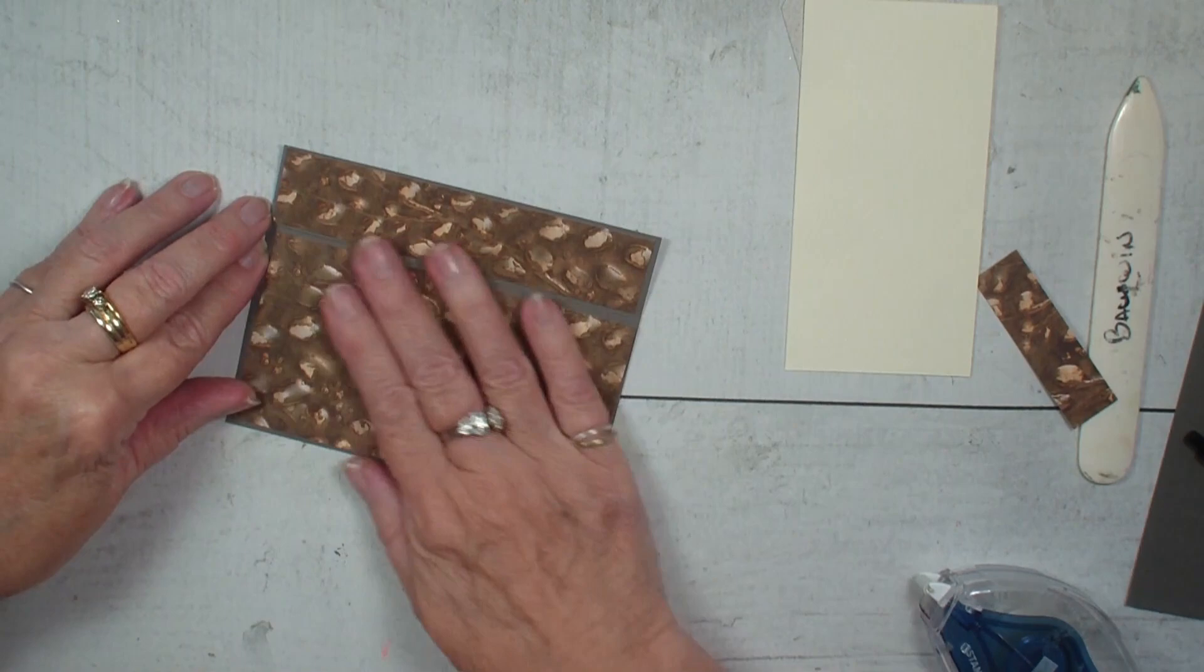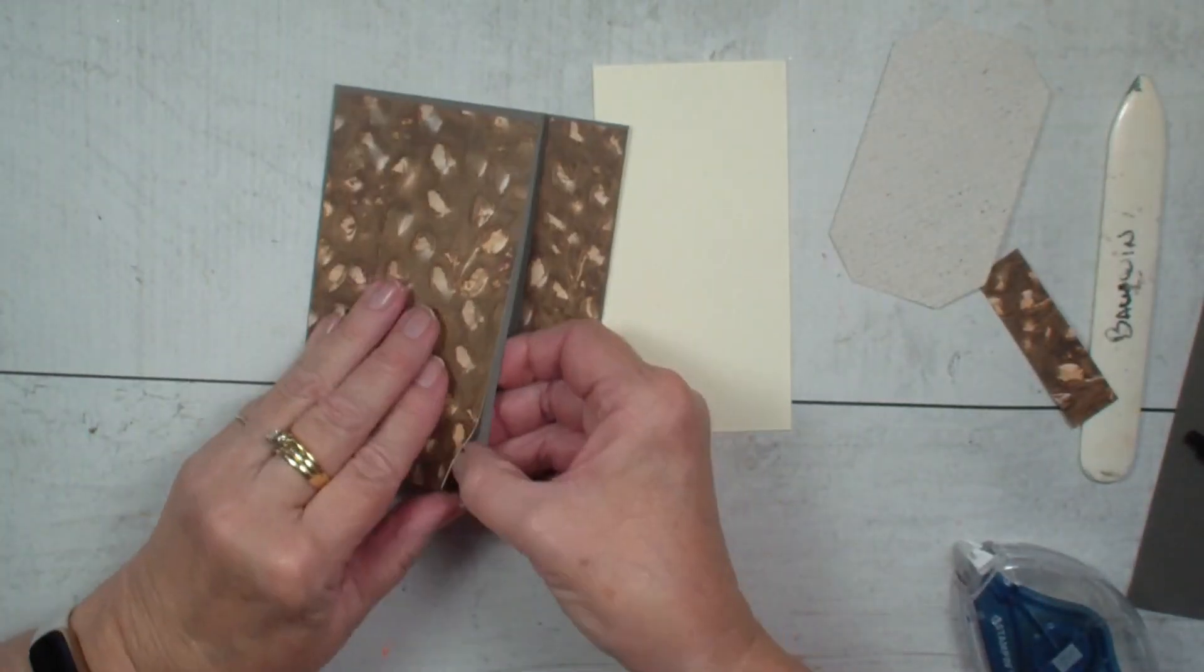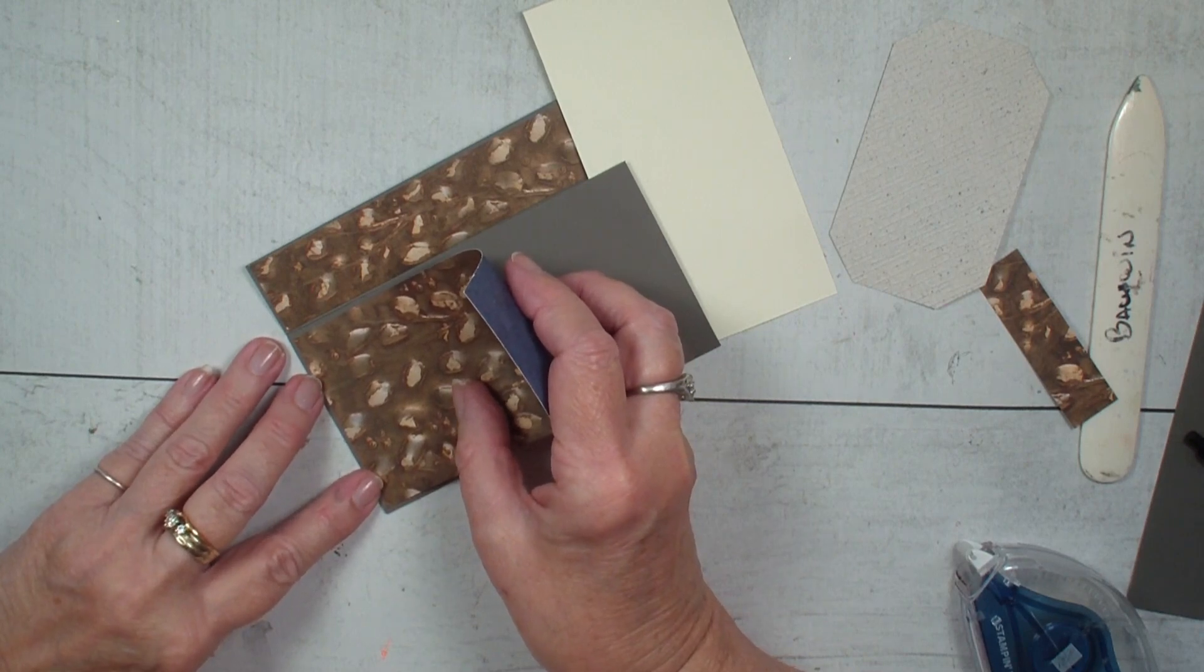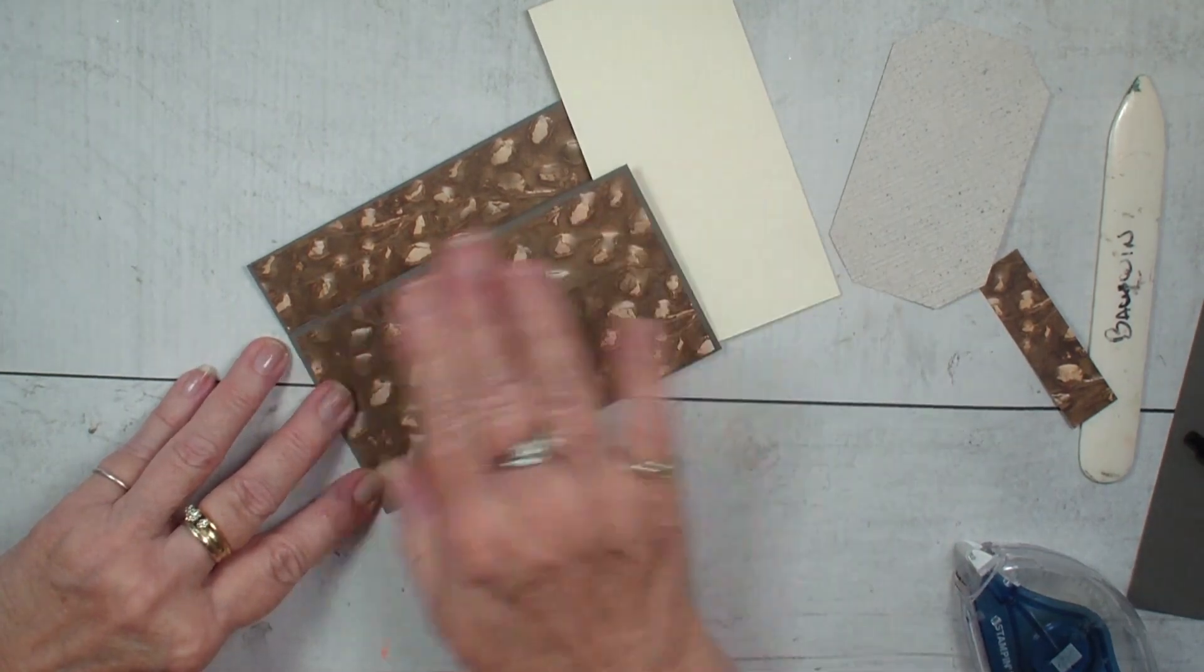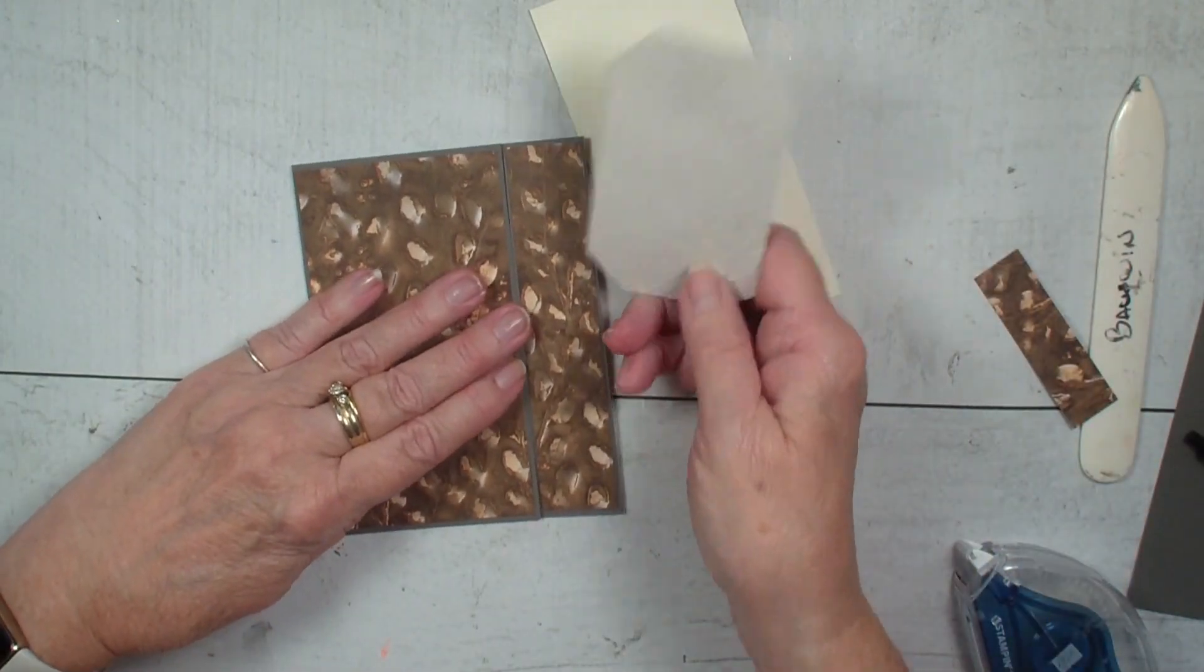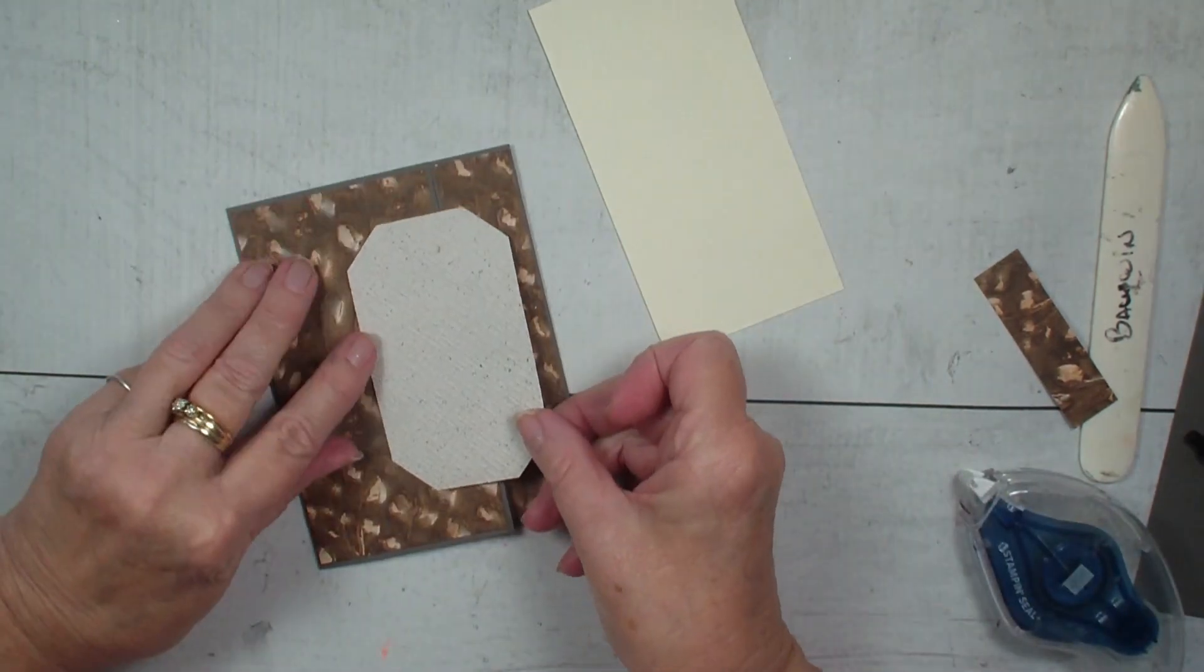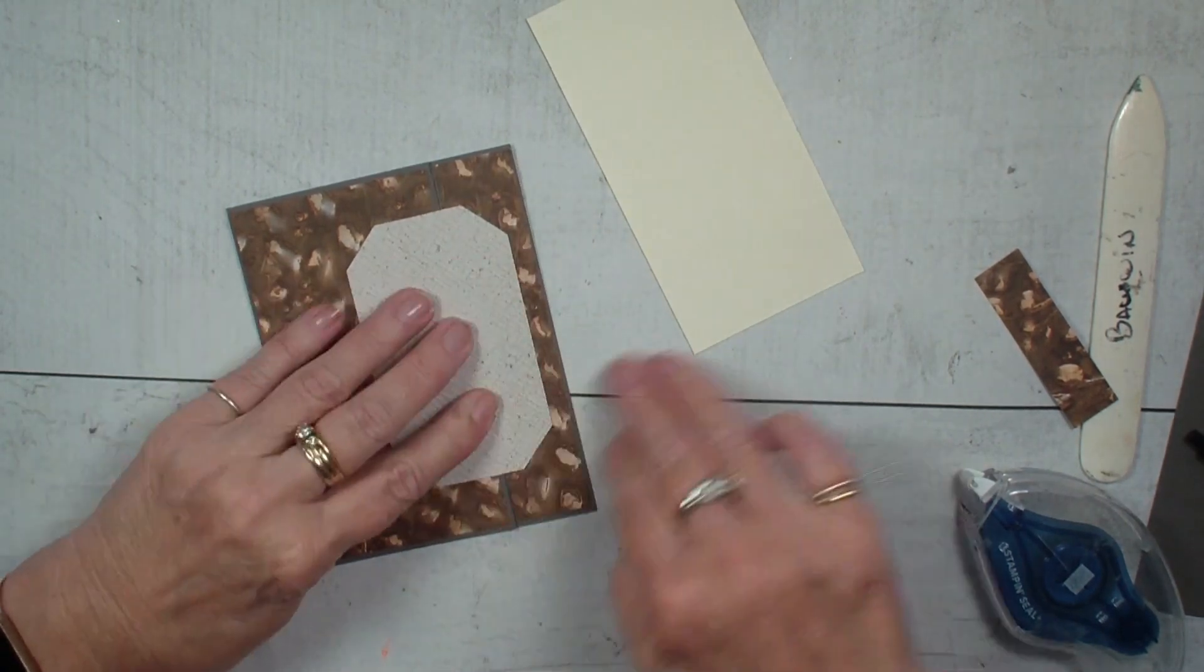So next what I'm going to do is I'm going to grab, oops that is far from being straight. Let's get that. When it's only an eighth of an inch a lot of times I will use my Tombow glue because it's easier to adhere. I'm going to grab that designer series paper and I'm going to just put adhesive on the one side. Again I have already run this through my embossing folder to give it some texture. So we've got that.